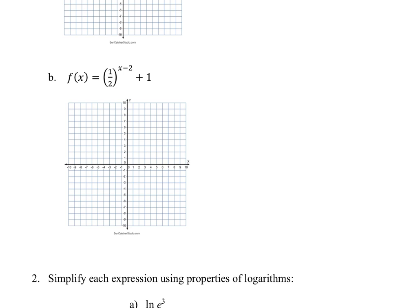Part B has a vertical translation up 1 unit, so the horizontal asymptote is at positive 1. Plotting several points: when x equals 0, we compute 0 subtract 2 equals negative 2, so one-half to the power of negative 2 equals 2 squared equals 4, and 4 plus 1 equals 5. So (0, 5) is the y-intercept.